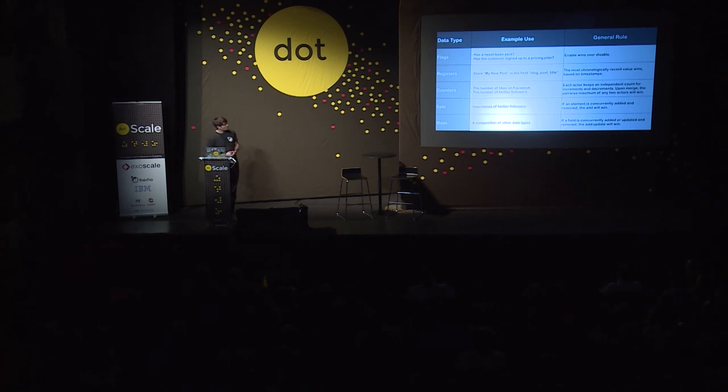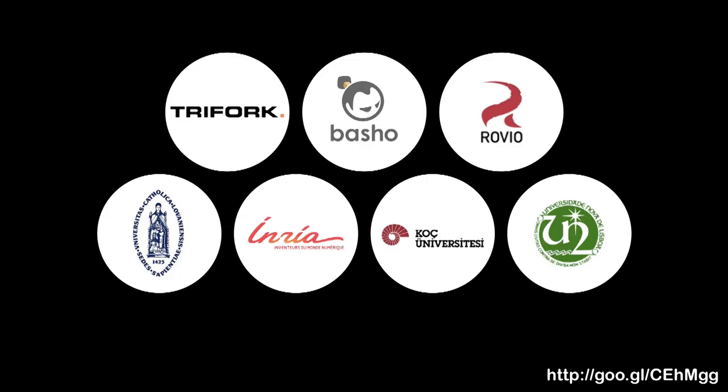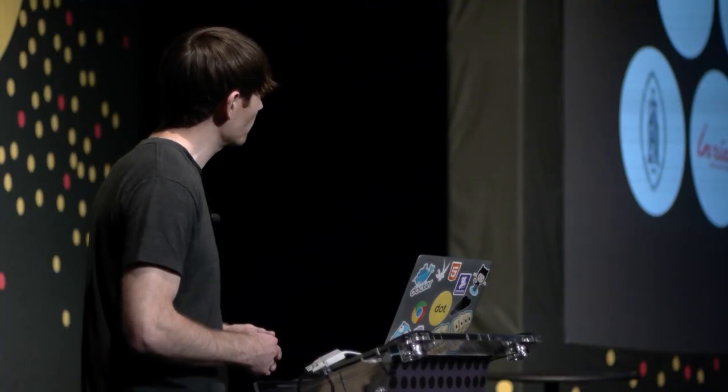These are some example data types that have been developed from research at a few research institutes and a few companies, and they show the kind of building blocks of a distributed system. It's ongoing research — there are around five or six so far — but it's being backed by the European Commission and a series of universities, and I hope to see some new data types soon.